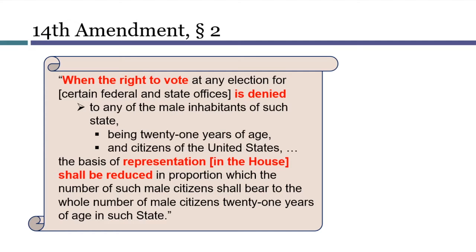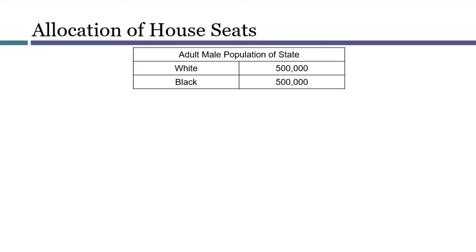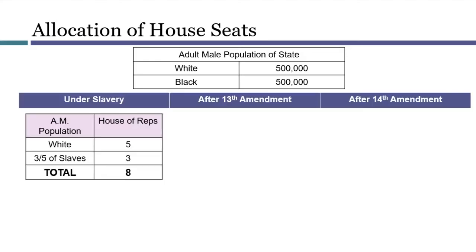Some simple math will illustrate how this was intended to work. Let's assume that a state that once had slavery had a population of a million adult men, which would entitle it to ten seats in the House. Let's also assume that the state is split 50-50 along racial lines. Under the original Constitution, which allowed slavery, the Three-Fifths Compromise meant that this state would have had eight seats in the House, even though the enslaved half of the population was denied the right to vote at all.